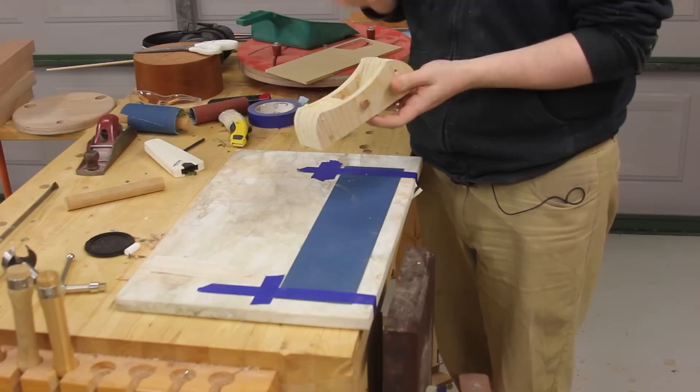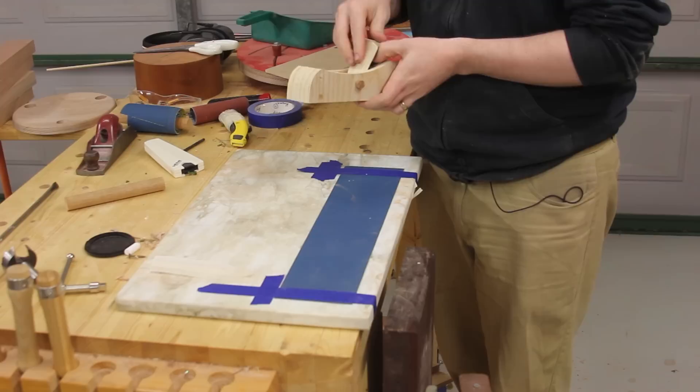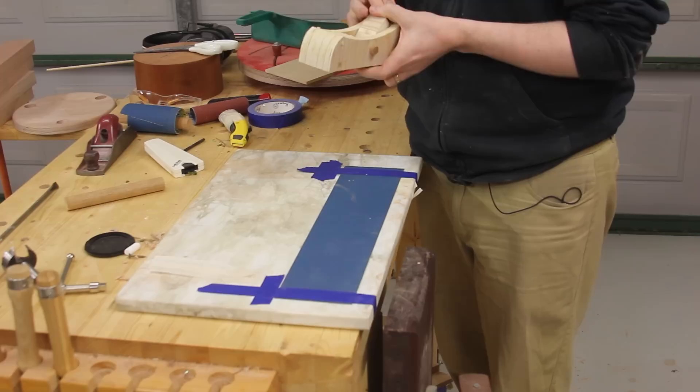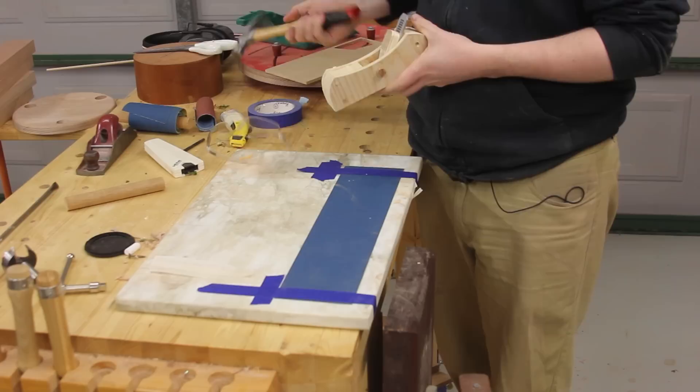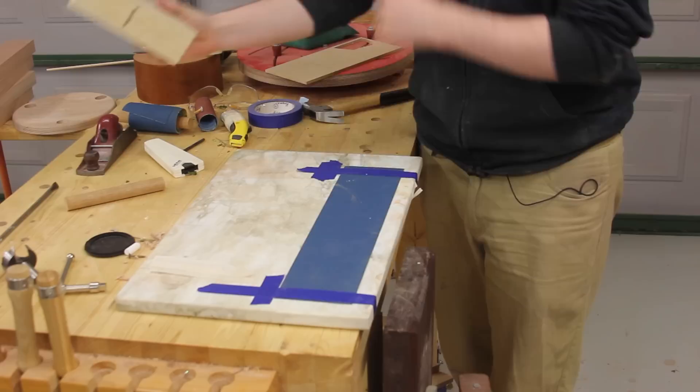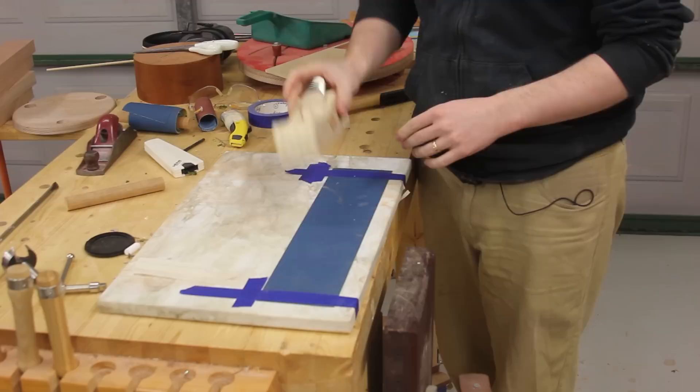Alright, so the plane is nice and dry but we need to flatten the bottom and also expose enough of a gap in the mouth so that the blade will come through. So at the moment it just doesn't quite poke through. So what I'm going to do is install the wedge and the blade and just have them back a little bit from the edge of the mouth and we're just going to sand. And all I've got here is a marble chopping board so it's nice and flat with some 80 grit sandpaper taped to it.